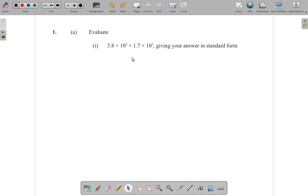This is the January 2019 CSEC mathematics paper, question 1a part 1: Evaluate 3.8 times 10 squared plus 1.7 times 10 cubed, giving your answer in standard form. Now before we start, remember you must attempt all the questions first before you actually watch these past paper solutions.